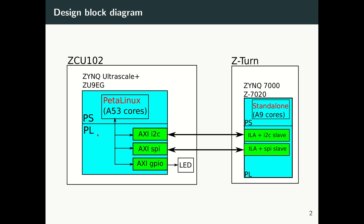The concept shown here is similar for peripherals in the PS as well. What we show here — how to talk to AXI SPI located in the PL — is basically more difficult in comparison with the one in the PS. So as I said, the ZCU102 side will be master and the Z-turn side will be slave. Here I'm running standalone software and here I'm running PetaLinux.